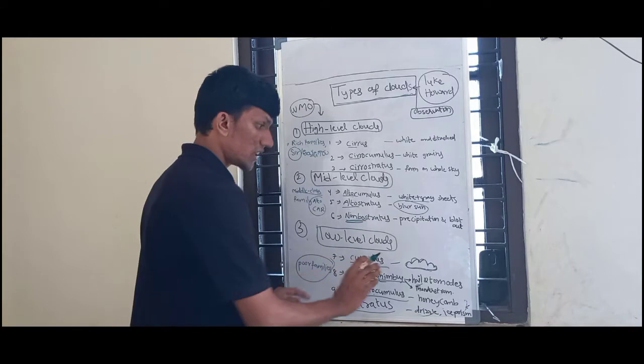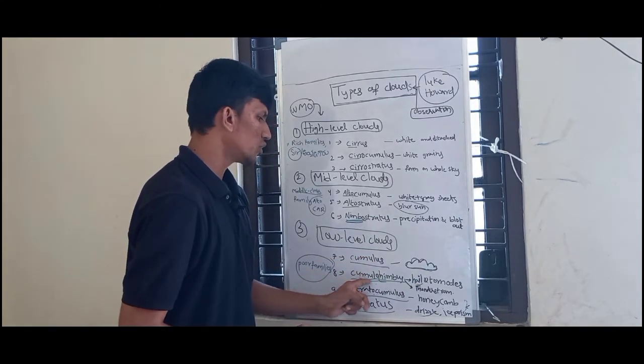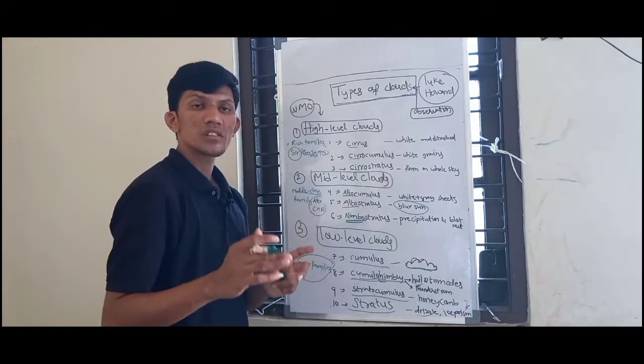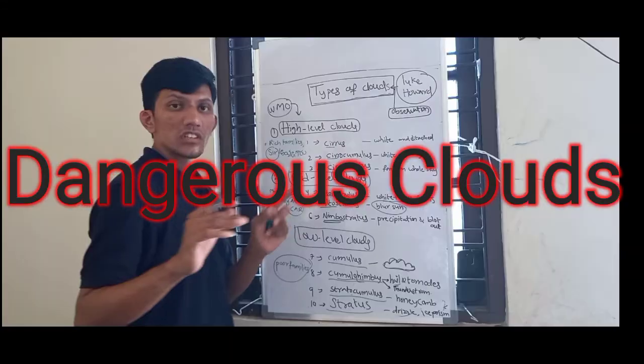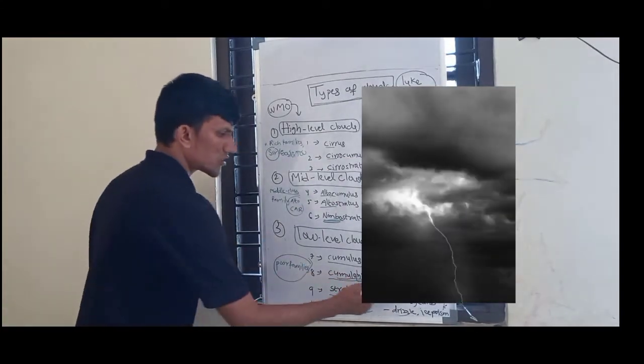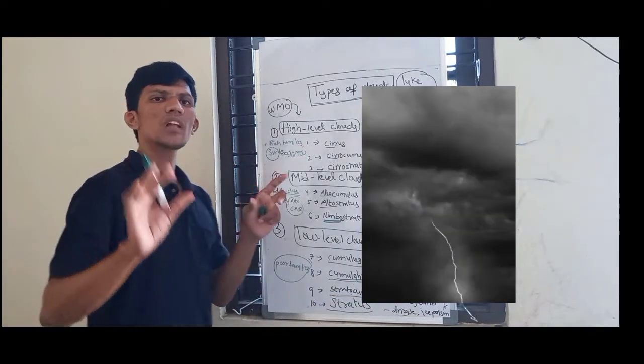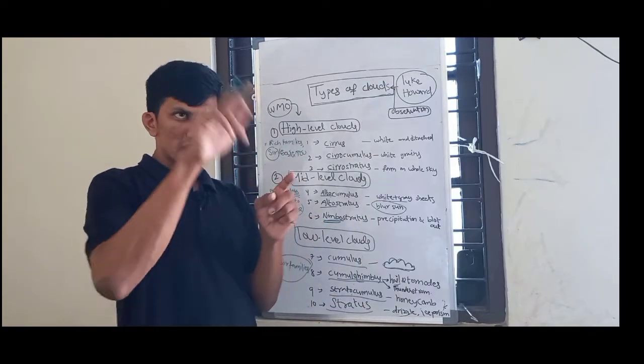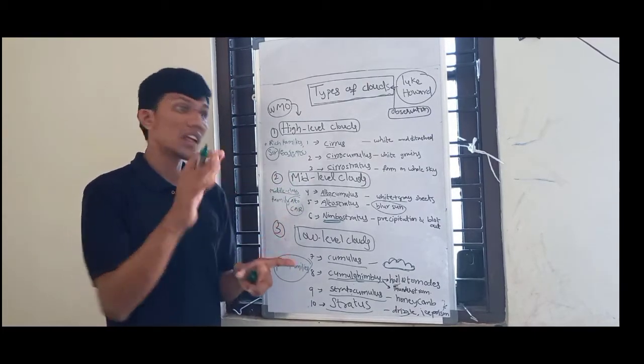Cumulonimbus - thunderstorms. Thunderstorms are thunderstorms. Stratocumulus - it looks a little like honeycomb. It's a little dark, beetle-like water.